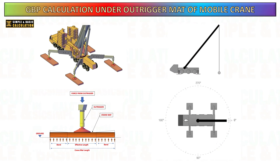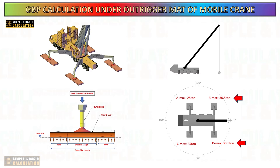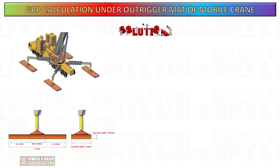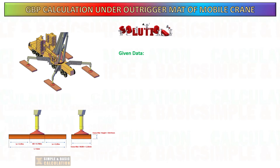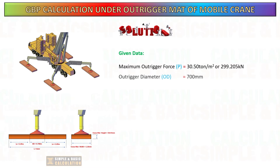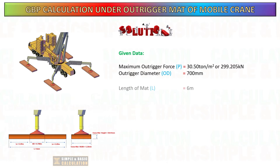The ground bearing pressure generated by the crane during lifting depends primarily on the weight of the load being lifted. As the crane lifts heavier loads, the downward force exerted on the crane outrigger results in higher ground bearing pressure. We will use the maximum outrigger load for our calculation. The required data includes: maximum outrigger force generated during the lifting operation, diameter of the crane's outrigger, overall dimensions of the crane mat, and the steel grade of the I-beam.